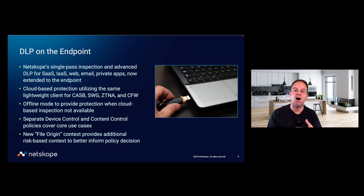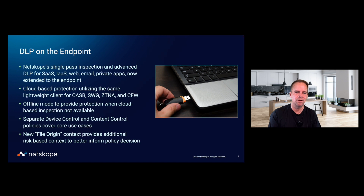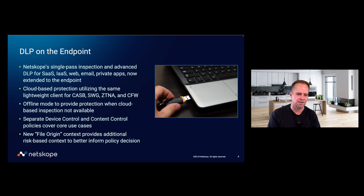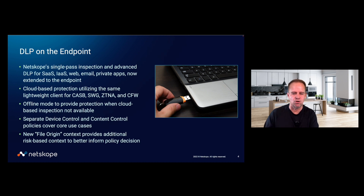We've also implemented an offline mode. Since we're using a cloud inspection point, if there's a network disconnection, we have options to continue to operate even if you can't reach the Netscope cloud. We also have separate device control and content control policies to cover an expanded set of use cases. Sometimes you don't want to inspect the data going to USB storage — you simply want to block access to it. That's what device control policies are all about.